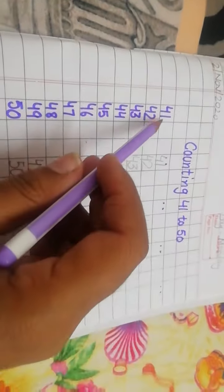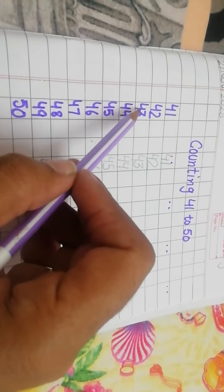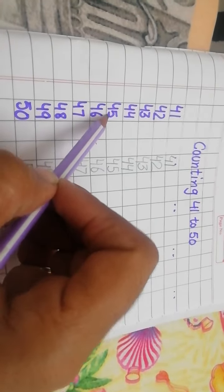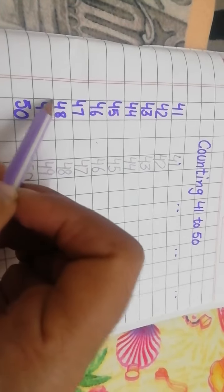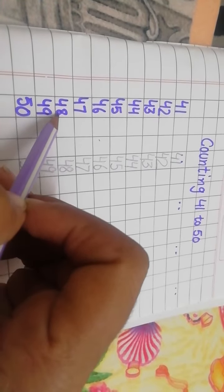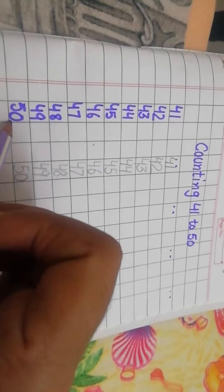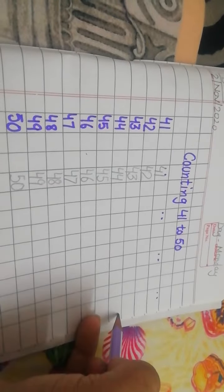41, 4-1, 41. 42, 4-2, 42. 43, 4-3, 43. 44, 4-4, 44. 45, 4-5, 45. 46, 4-6, 46. 47, 4-7, 47. 48, 4-8, 48. 49, 4-9, 49. 50, 5-0, 50. Dear student, you will write four lines in your notebook.